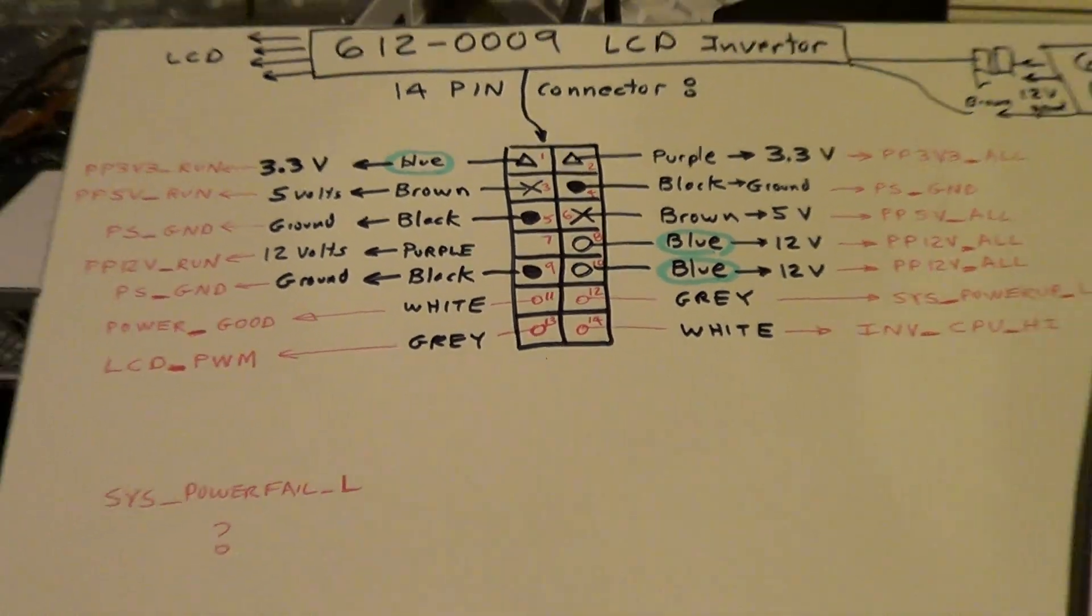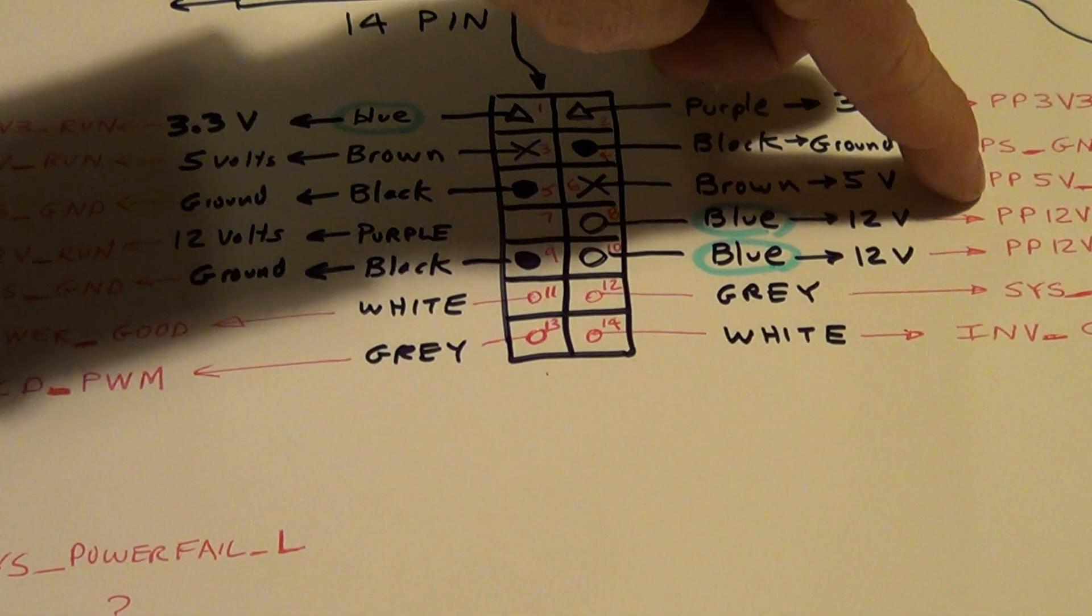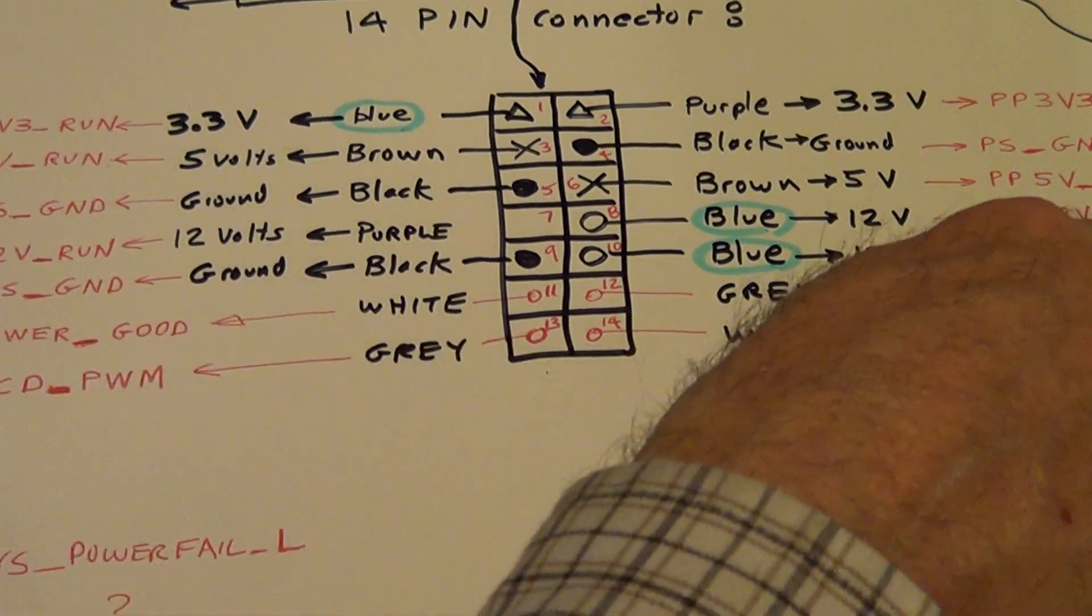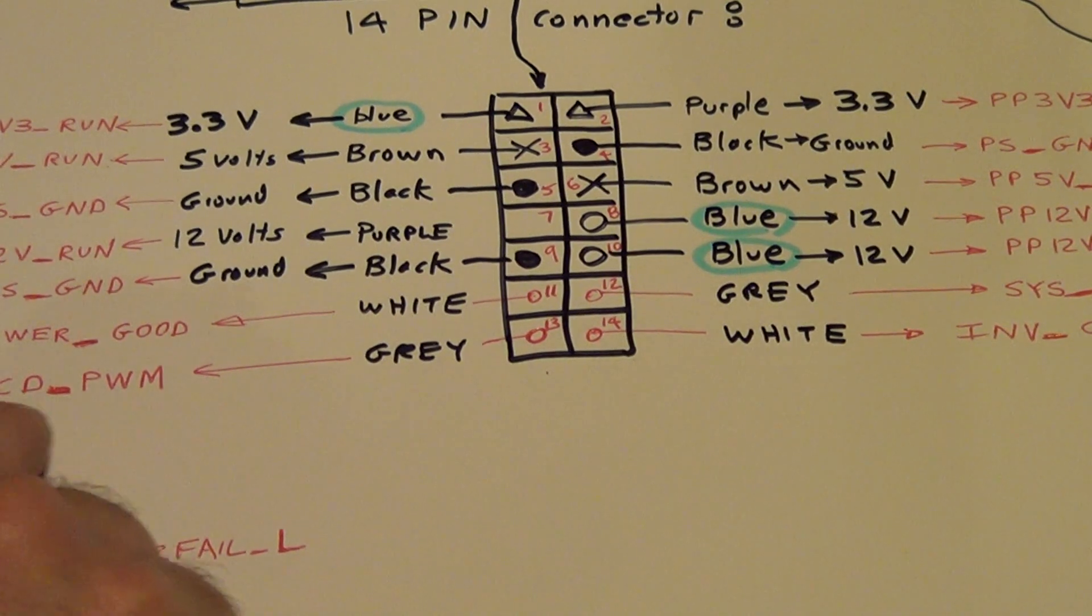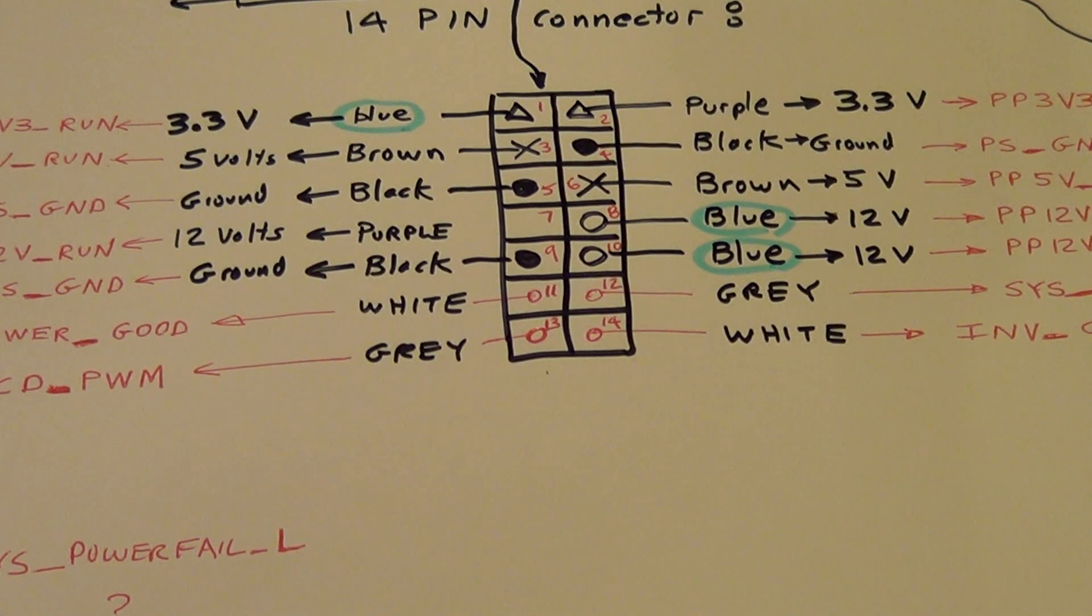I've confirmed that, at least on here, these are always on when the supply is working. You can turn the run ones off by pulling that high. And then the LCD PWM is the backlight. And no matter what I've done, I've never been able to get the power good command, that pin, to ever read anything high.